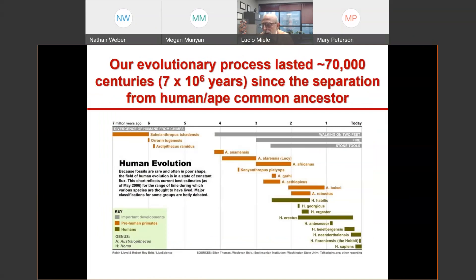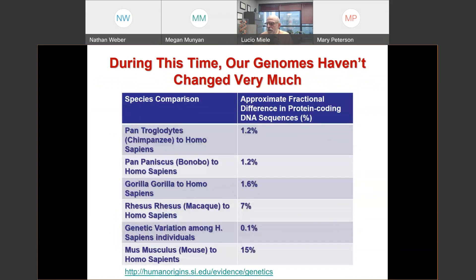I give these time intervals in centuries because that gives us an immediate sense of what I'm talking about — seven million years doesn't register. But think about what the world was like two centuries ago: no running water in most houses, no electricity, no computers, no cars. It took 70,000 centuries from the emergence of the first common ancestor of humans until today — a very, very long time.